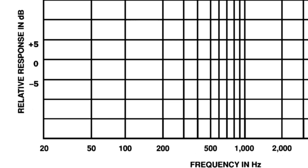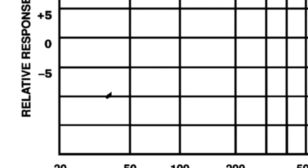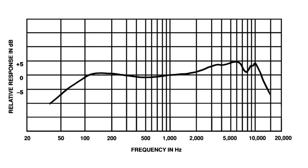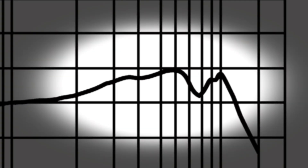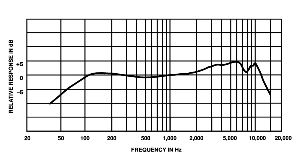A microphone with shaped response is more sensitive to some frequency ranges than others. A mic with increased sensitivity in the upper mid-range adds clarity to vocals and also works well on instruments like guitar amplifiers or drums.